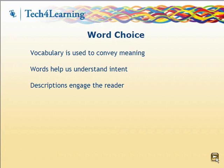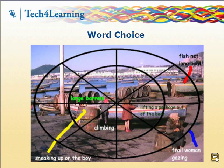Word choice refers to the vocabulary writers use to convey meaning. Precise vocabulary helps a reader better understand a writer's intention. Colorful words and creative descriptions can also engage a reader. Human beings go from images to words, and students can improve their word choices and vocabulary using visual learning strategies. Having students examine an image and describe what they perceive gives them the opportunity to explore words they might not otherwise use in their writing.